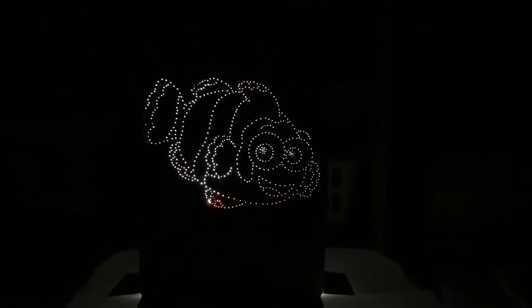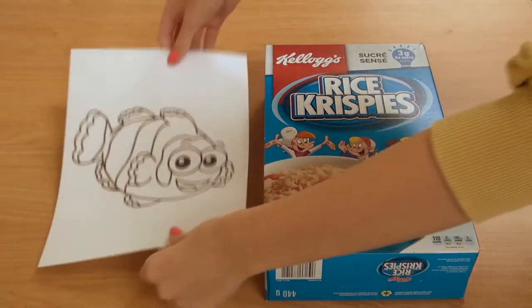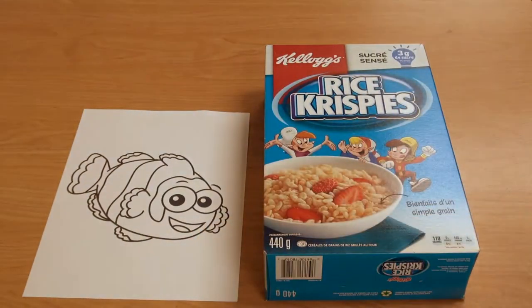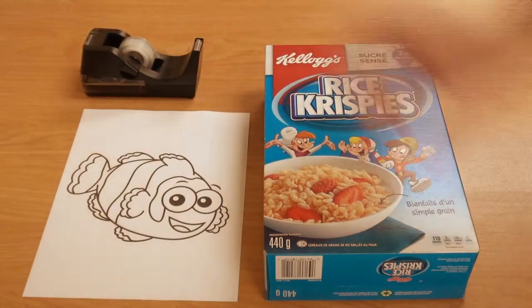For our first craft we're going to show you how to make a cereal box nightlight. All you need for this craft is a cereal box, an image you want to trace on a piece of paper, tape, and a pushpin.